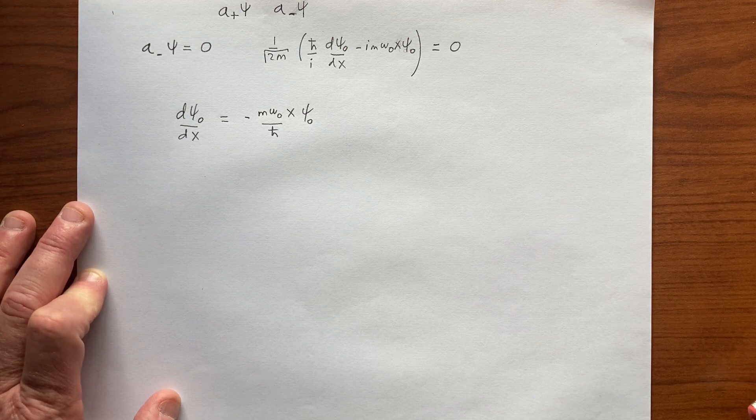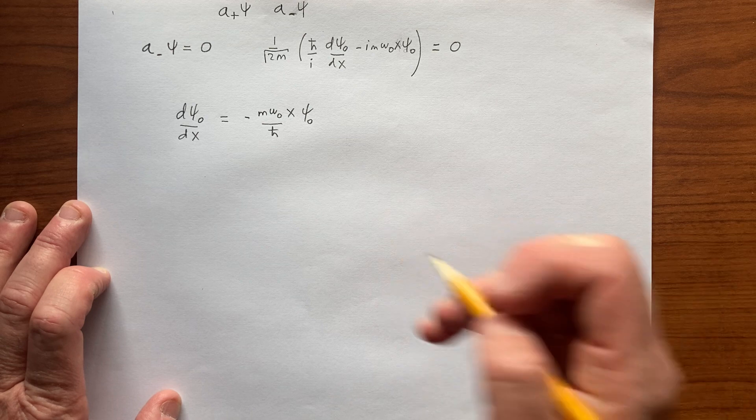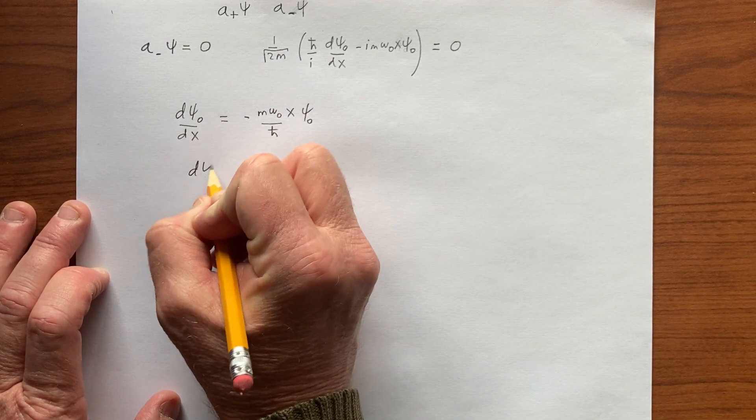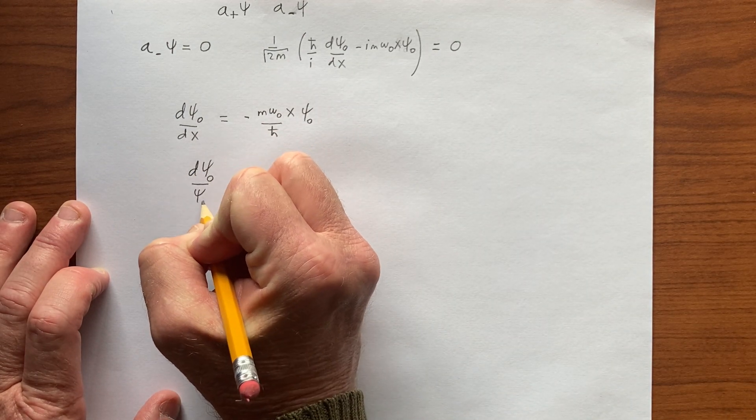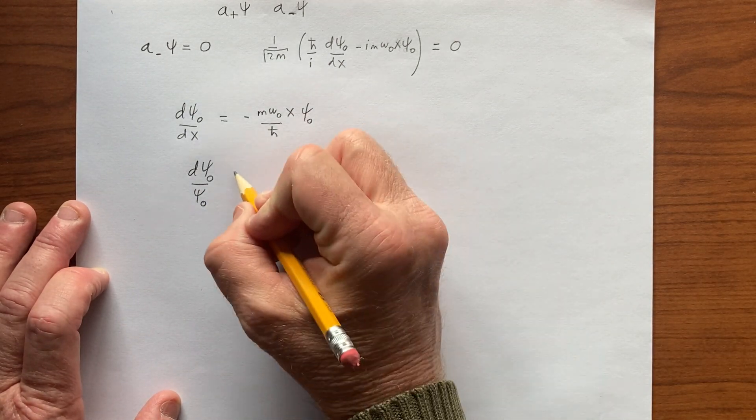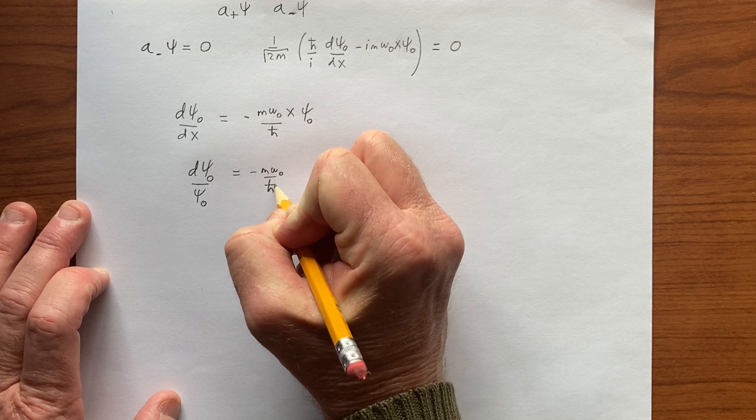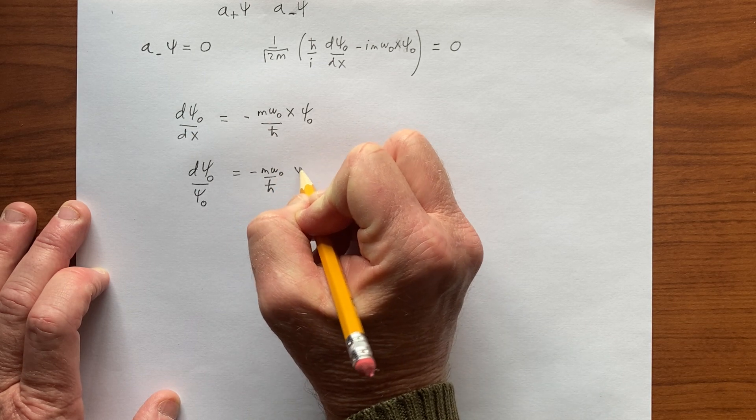And so now we have to bring the ψ to one side, and so we have dψ₀/ψ₀ equals minus m ω₀ over ℏ, x dx, and then we integrate both sides.